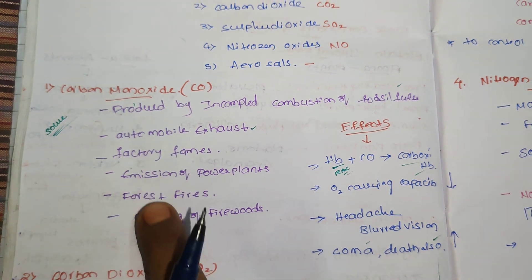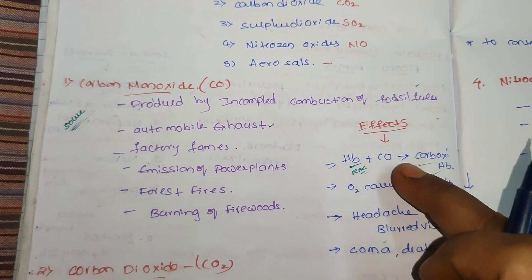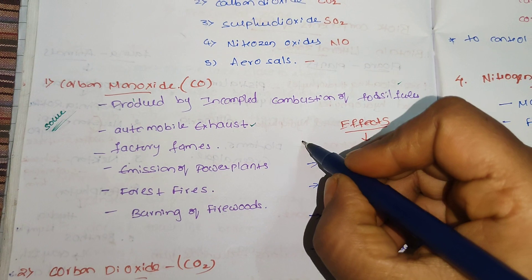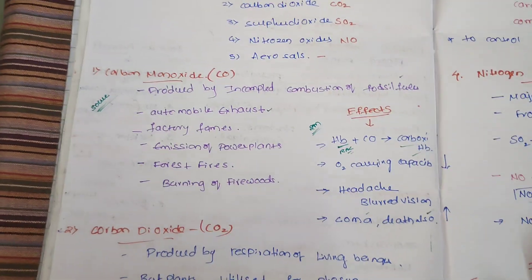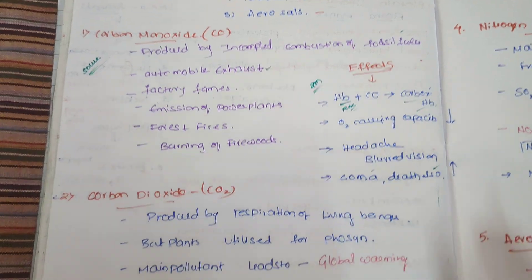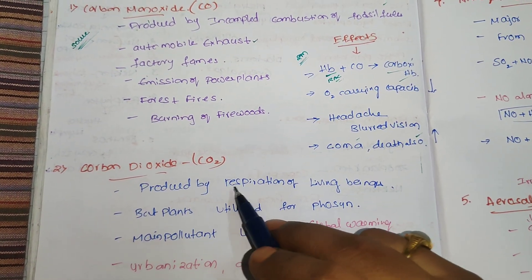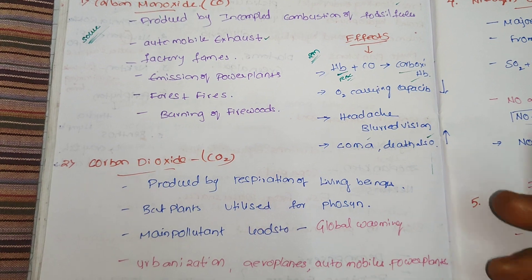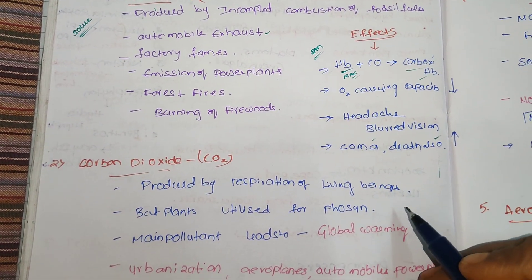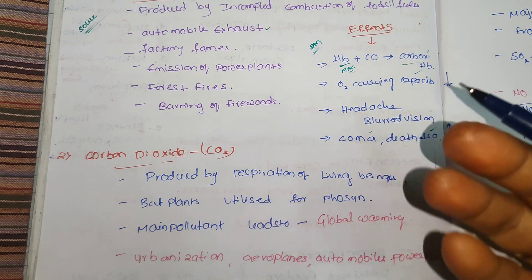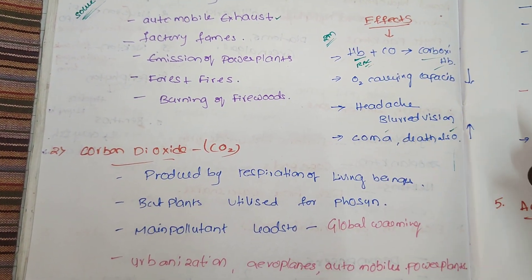So that covers the source of carbon monoxide and how it affects humans — this is also an important question even in chemistry. Then, carbon dioxide: it is produced by the respiration of living beings. While exhaling, we release carbon dioxide, but plants utilize that carbon dioxide through photosynthesis.